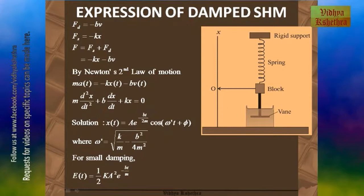On solving this differential equation, the displacement x(t) equals A times e raised to the power of negative bt by 2m, multiplied by cos(ω′t + φ), where ω′ equals the square root of k/m minus b²/4m². The damping is produced by the exponential function e raised to negative bt by 2m, and b is the damping constant. For small damping, the energy of the system is given by the expression: half times k times A² times e raised to negative bt by m.